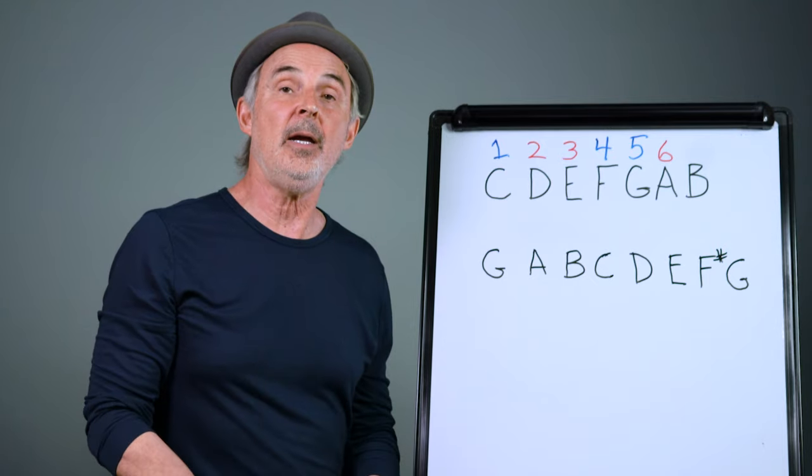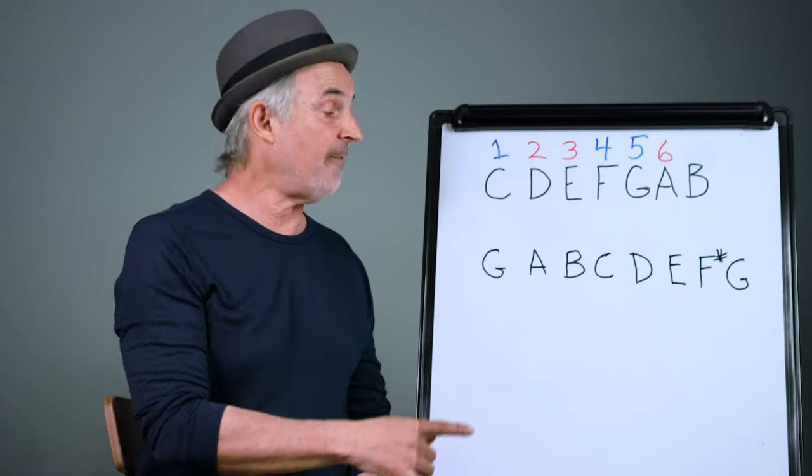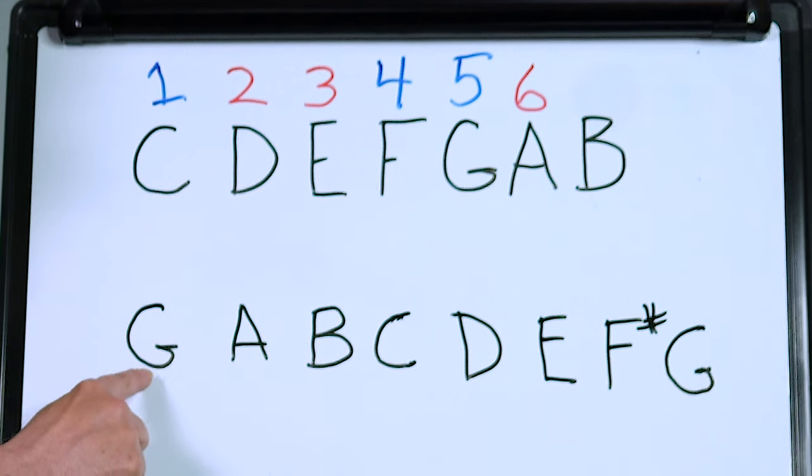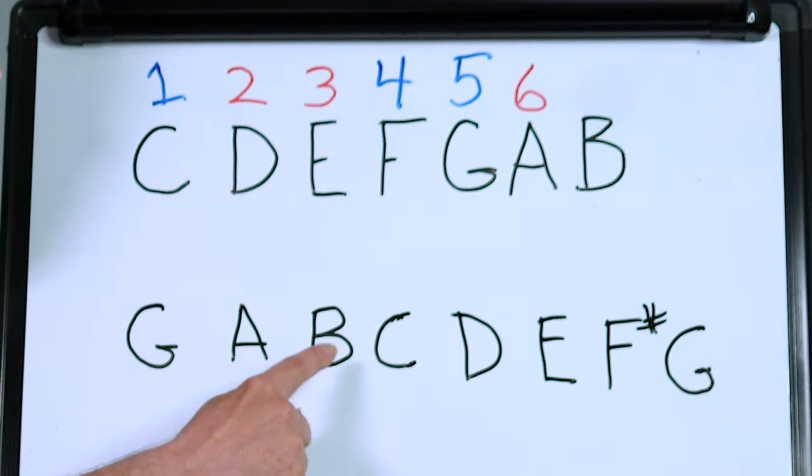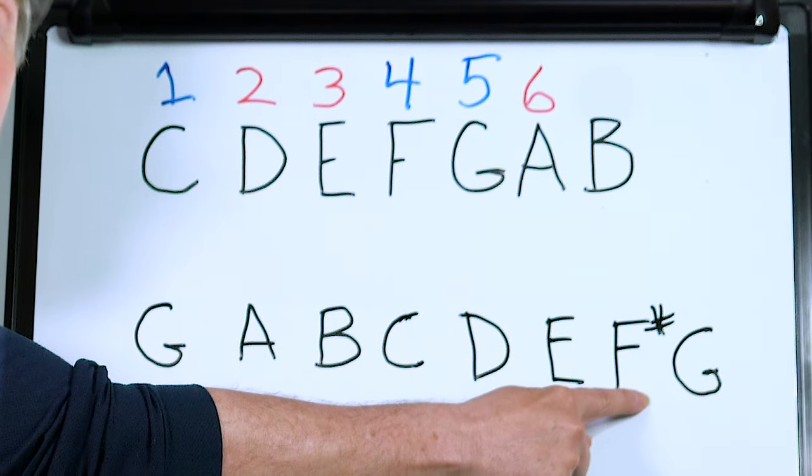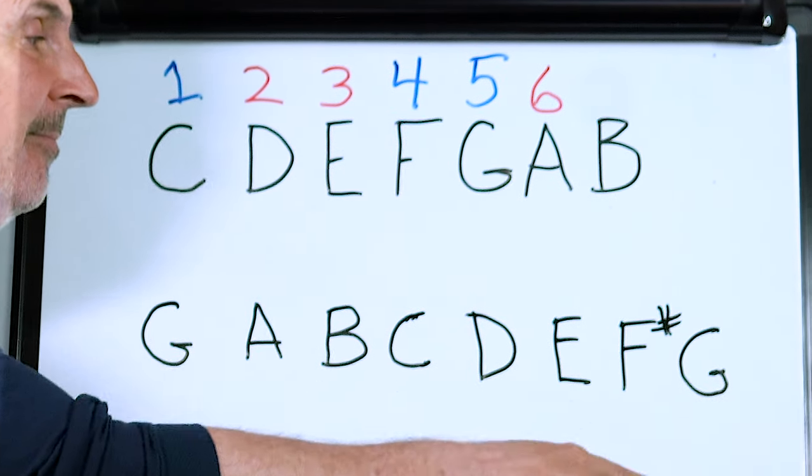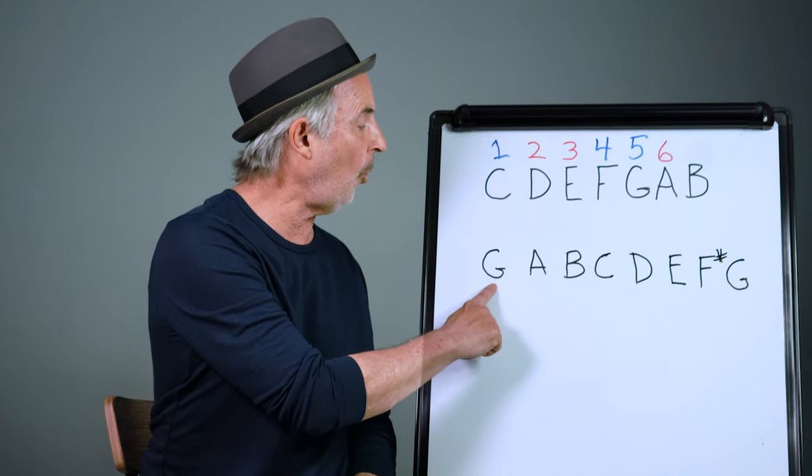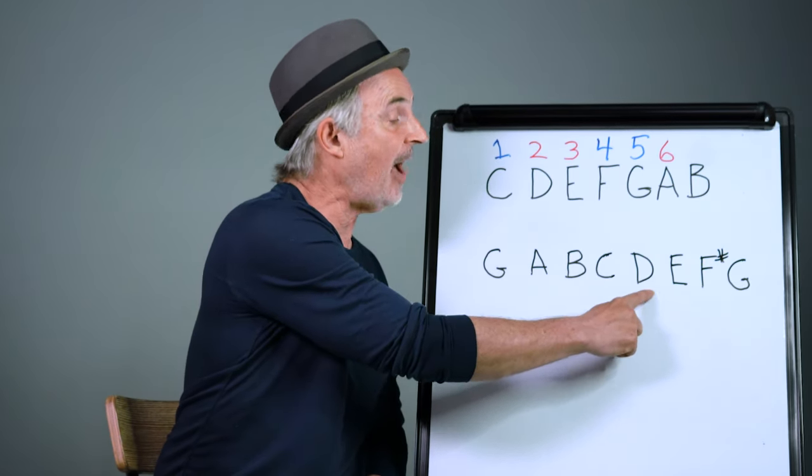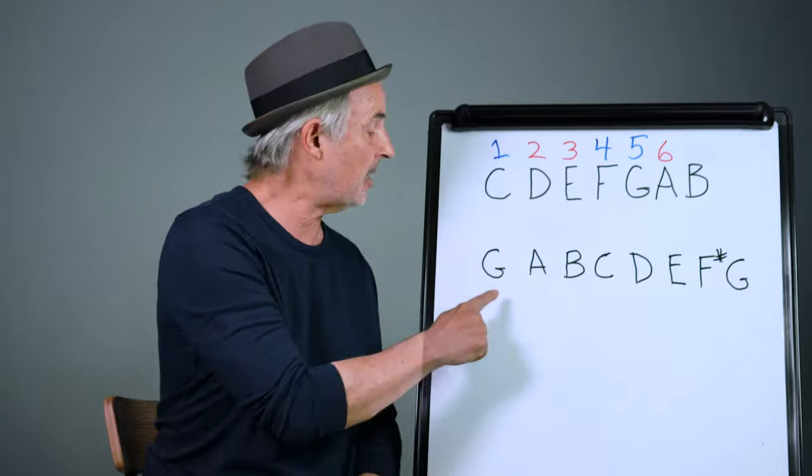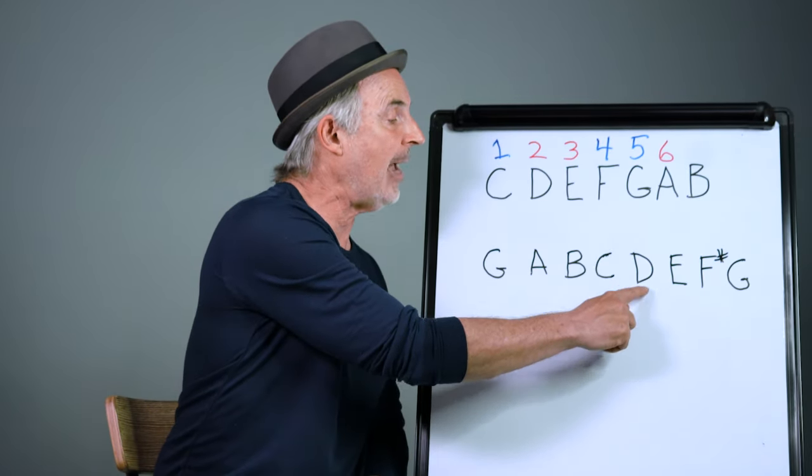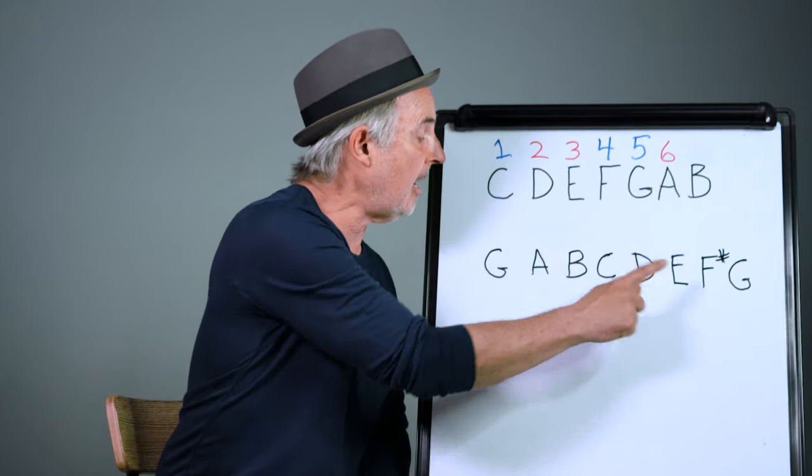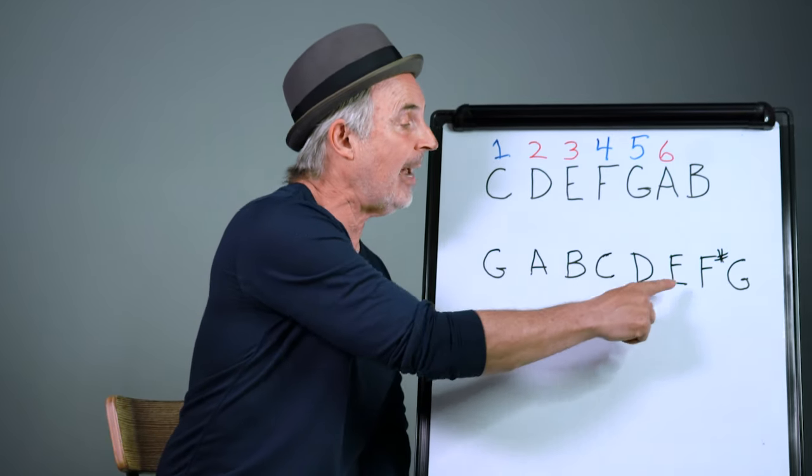You could apply the same thing starting on a different note, so I left an example here for the key of G. If we start on G and go through the scale, G A B C D E, it's going to be F sharp to make the scale accurate, and starts back to G, goes around in a circle again. Again if you took the one chord, the four chord, and the five chord, they're each going to be major. In this case G major, C major, and D major. If you take the two three and six, that would be A minor, B minor, and E minor.